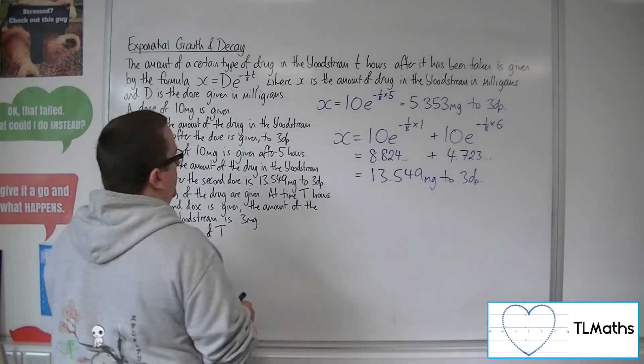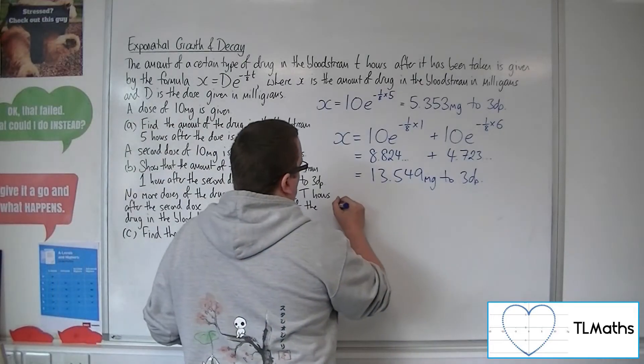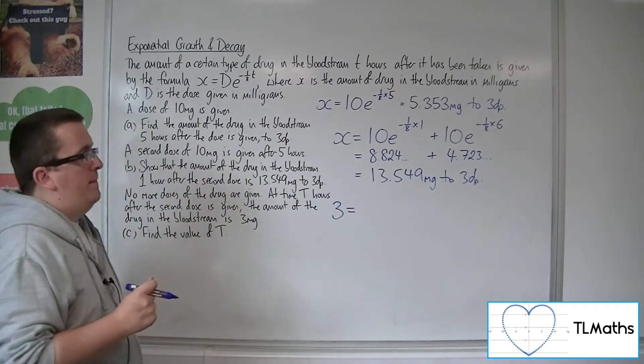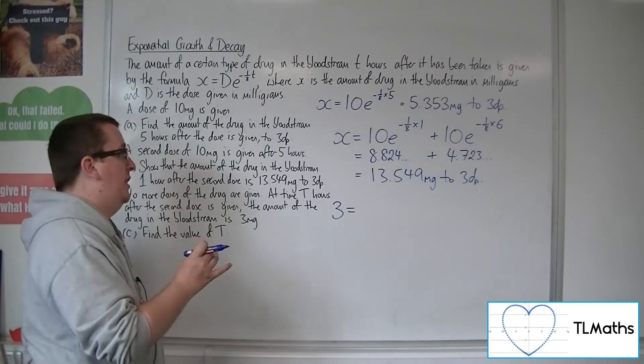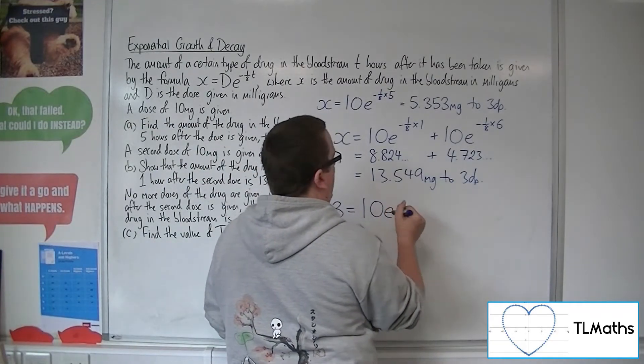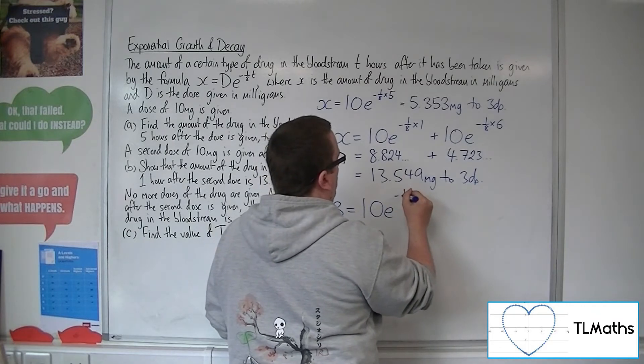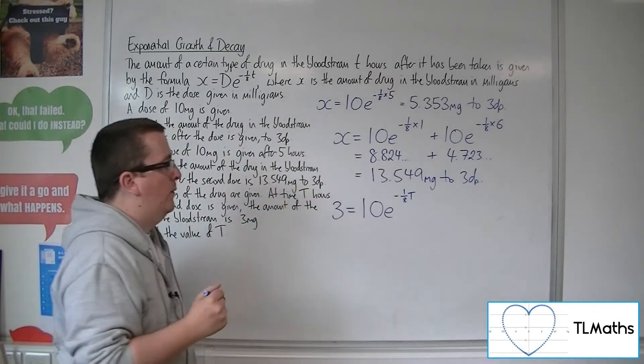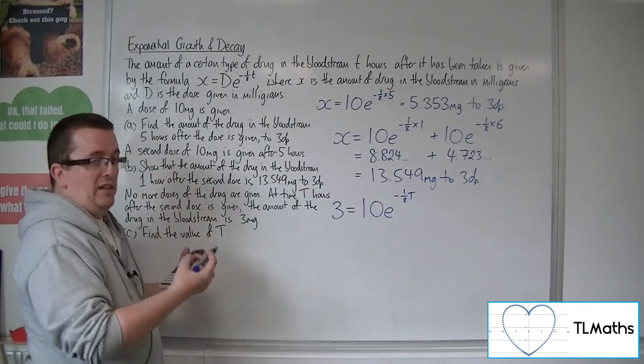Okay, so three is equal to, right, now we've got the second dose that is working, which will be given as 10e to the minus one-eighth T. Okay, capital T, that's your second dose.